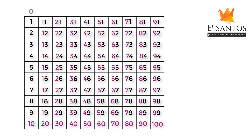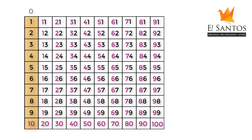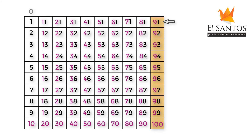Review and revise all the numbers. Point out to the children that we have used the tens and the ones in forming all these numbers. Establish that each column is a 10 block because it has 10 numbers. Count out the blocks: 1, 2, 3, 4, 5, 6, 7, 8, 9, 10.